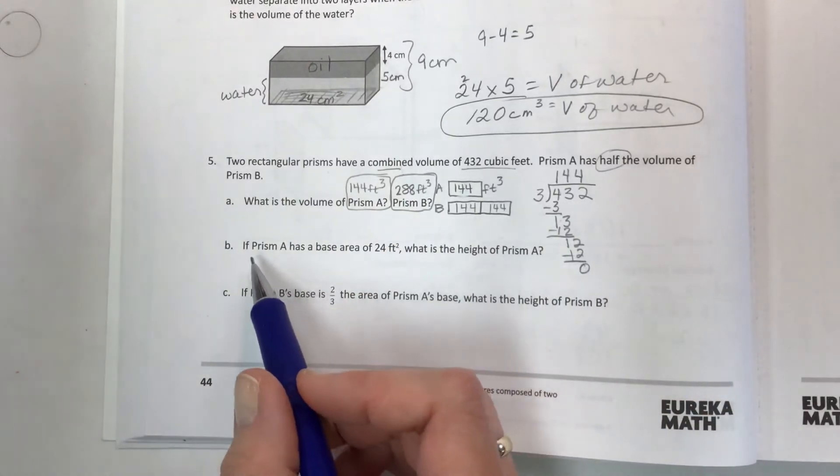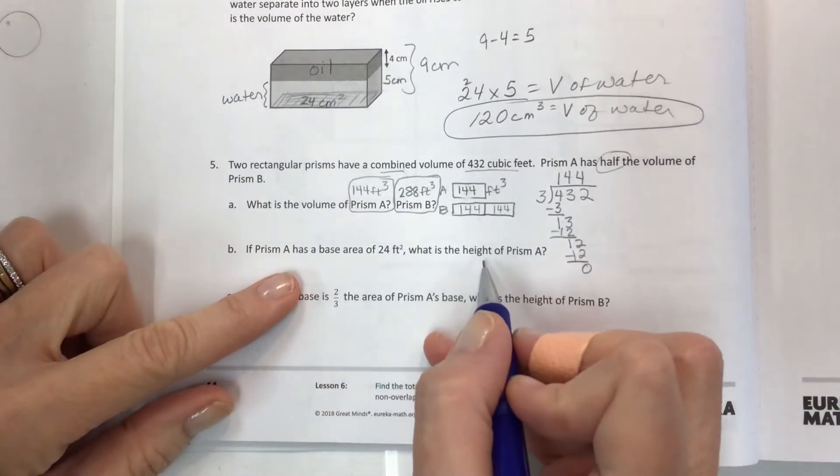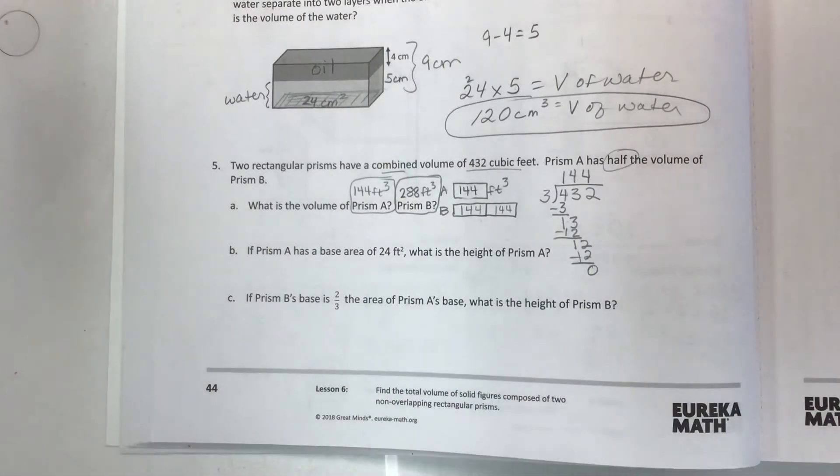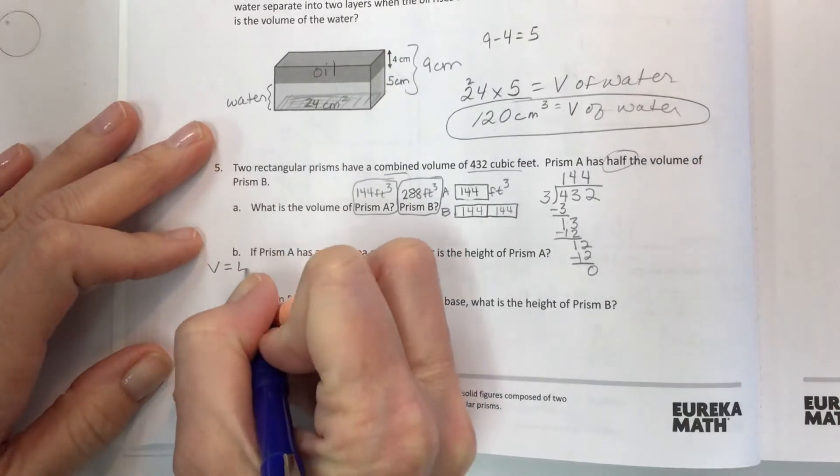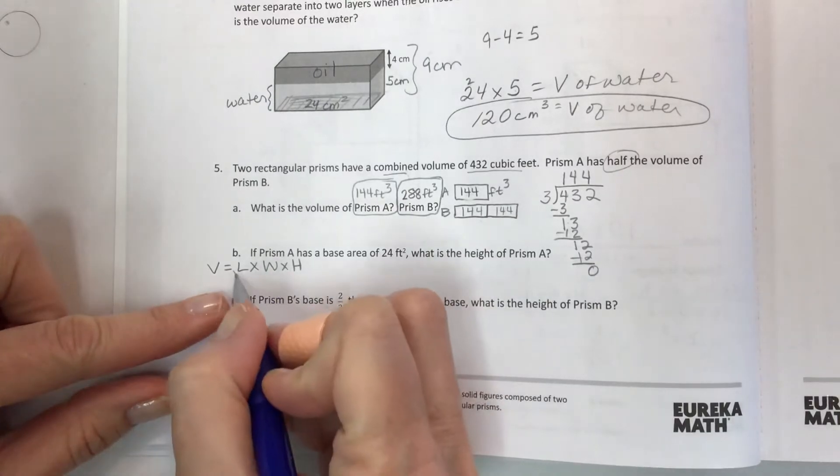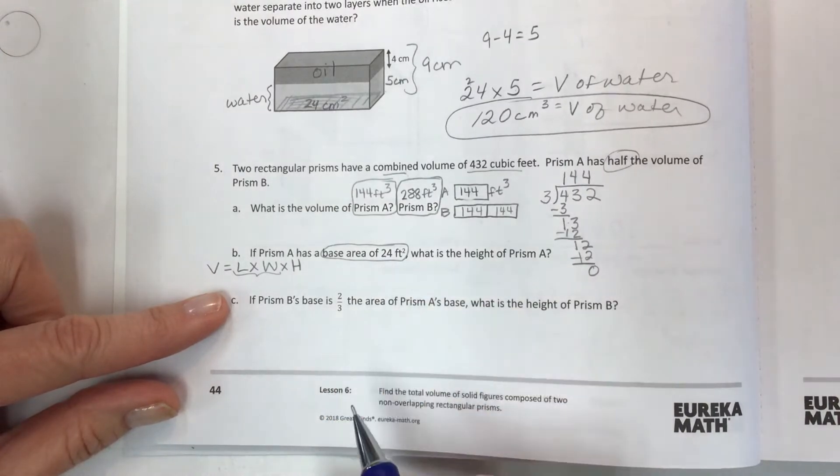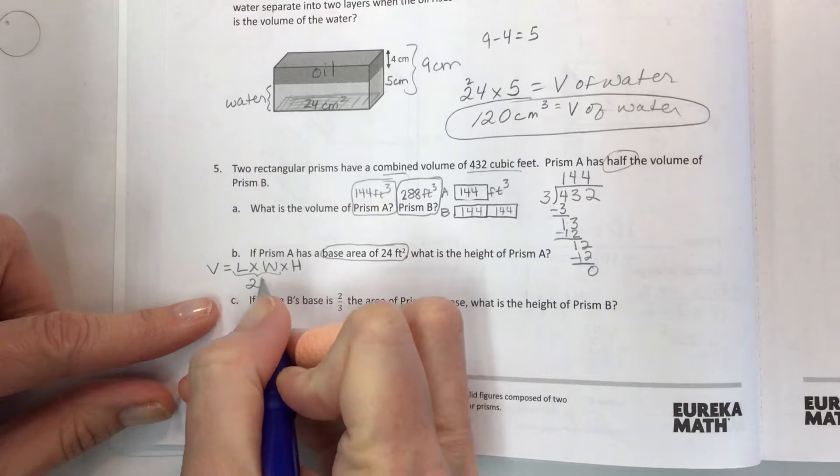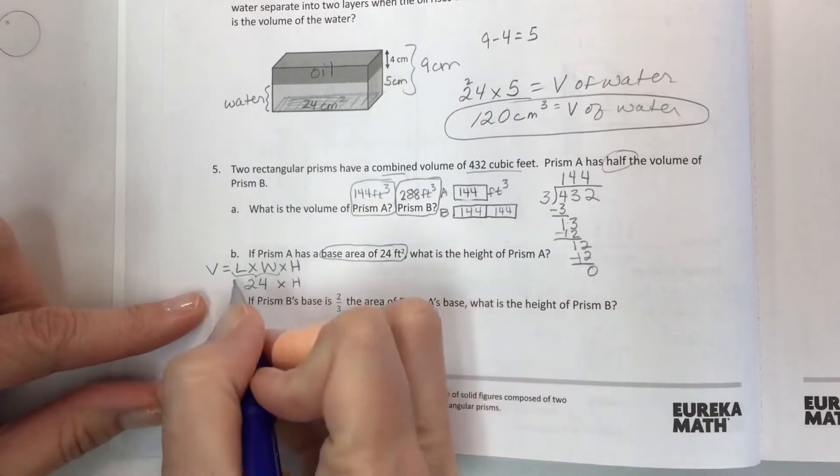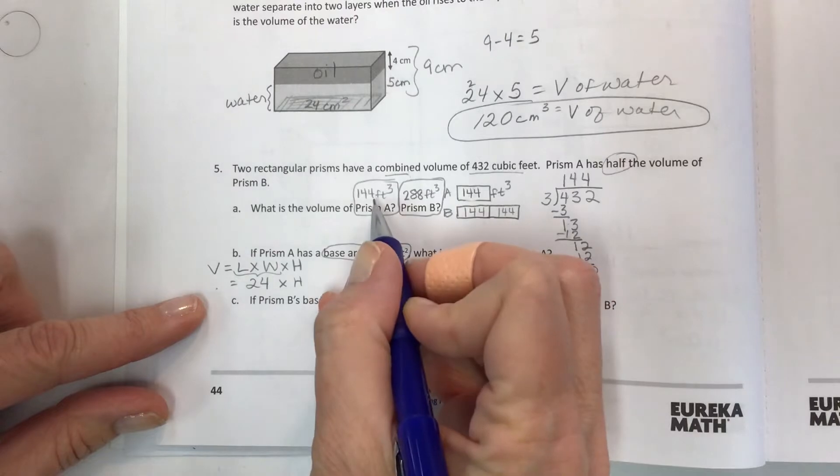Now we have part A finished but it gets a little bit more complicated. If prism A has a base area of 24 feet, what is the height of prism A? So we don't have to worry about the length and the width. Remember that the formula length times width times height requires these three things unless they have already given you the base area. The base area means they already did the work for you for two of the numbers and what they're asking is what the height is. But we do know the volume.